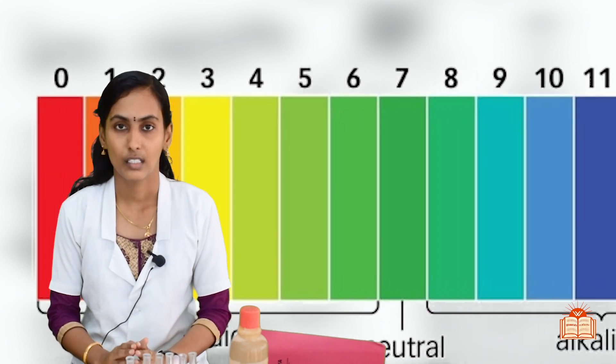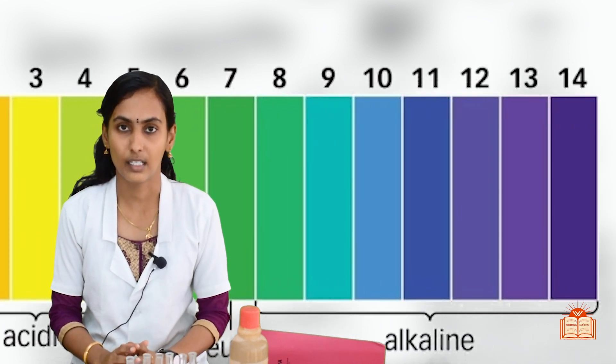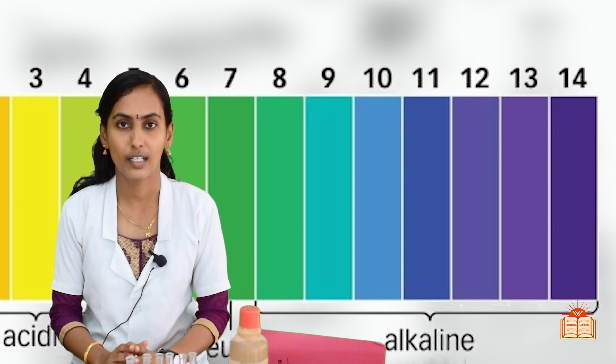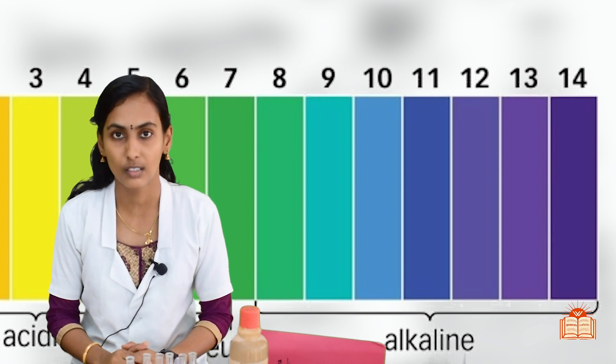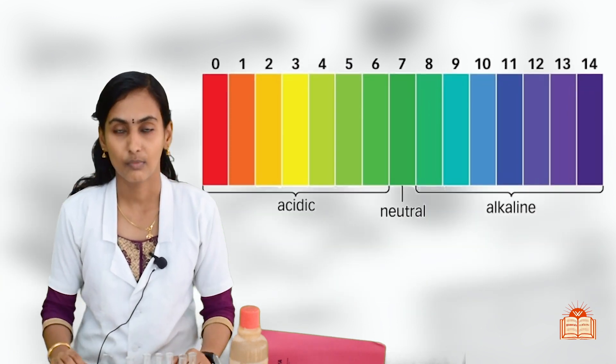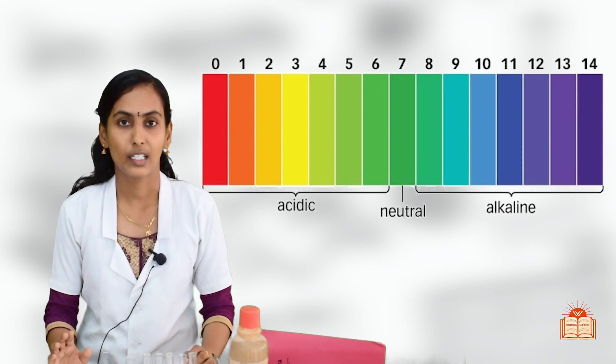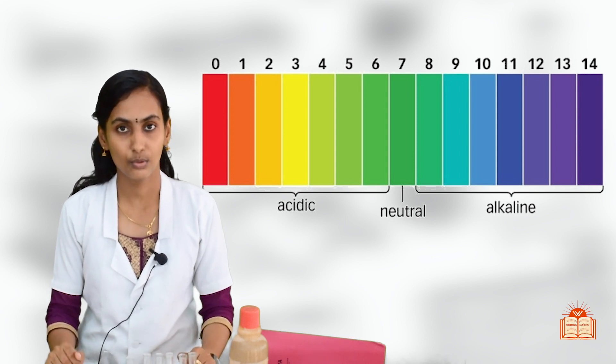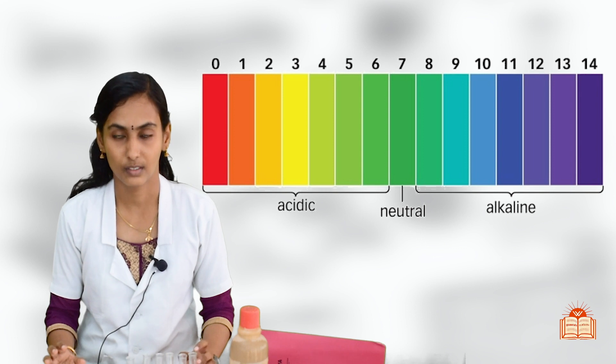Above 7, 8, 9, 9.5, 10, they are all weak base. 11, 12, 13, 14, they are all strong base. As per the value and color, we can get the approximate value of various solutions. Is it clear?